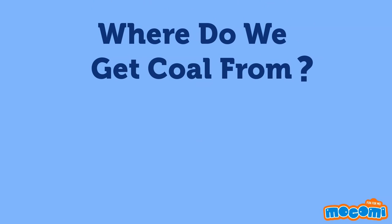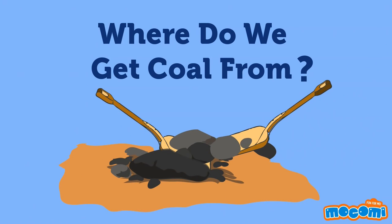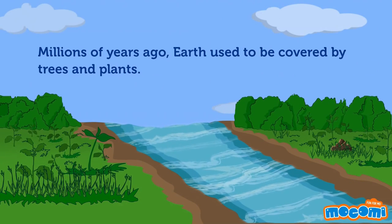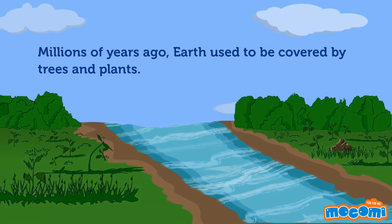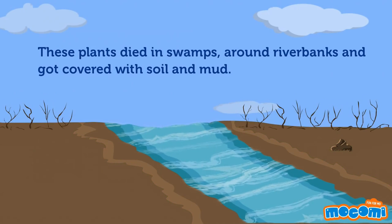Where do we get coal from? Millions of years ago, the earth used to be covered by trees and plants. These plants died in swamps around river banks and got covered with soil and mud.